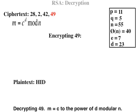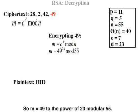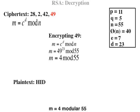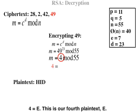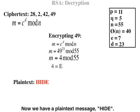Decrypting 49: M equals C to the power of D mod N, where C equals 49, D equals 23, N equals 55. So M equals 49 to the power of 23 mod 55. M equals 4 mod 55. 4 equals E. This is our fourth plaintext: E. Now we have the plaintext message: Hide.